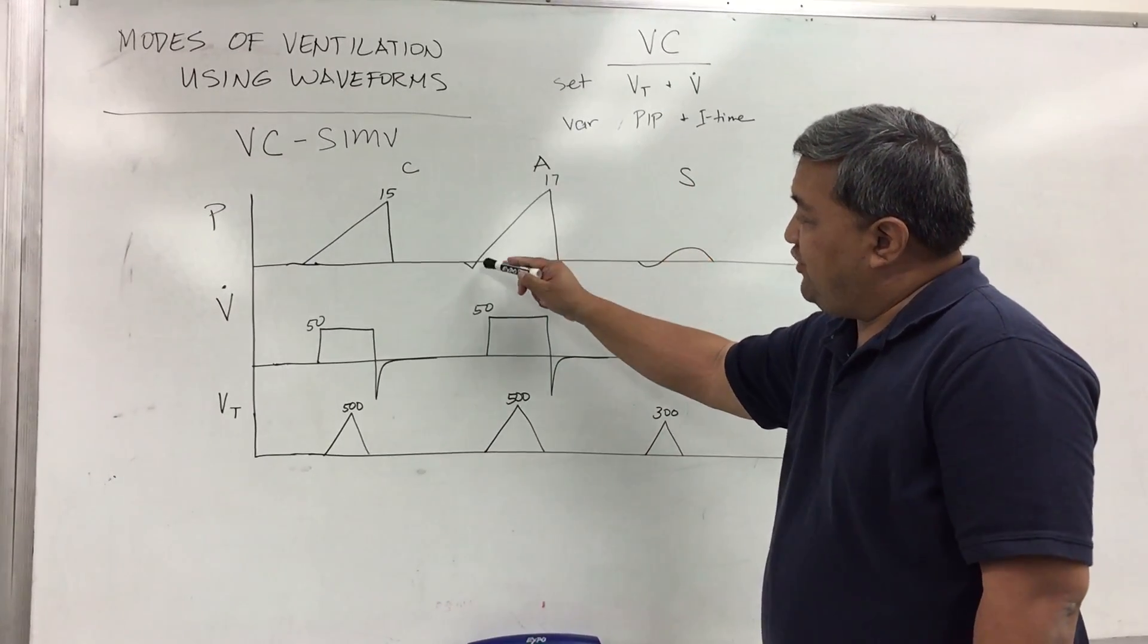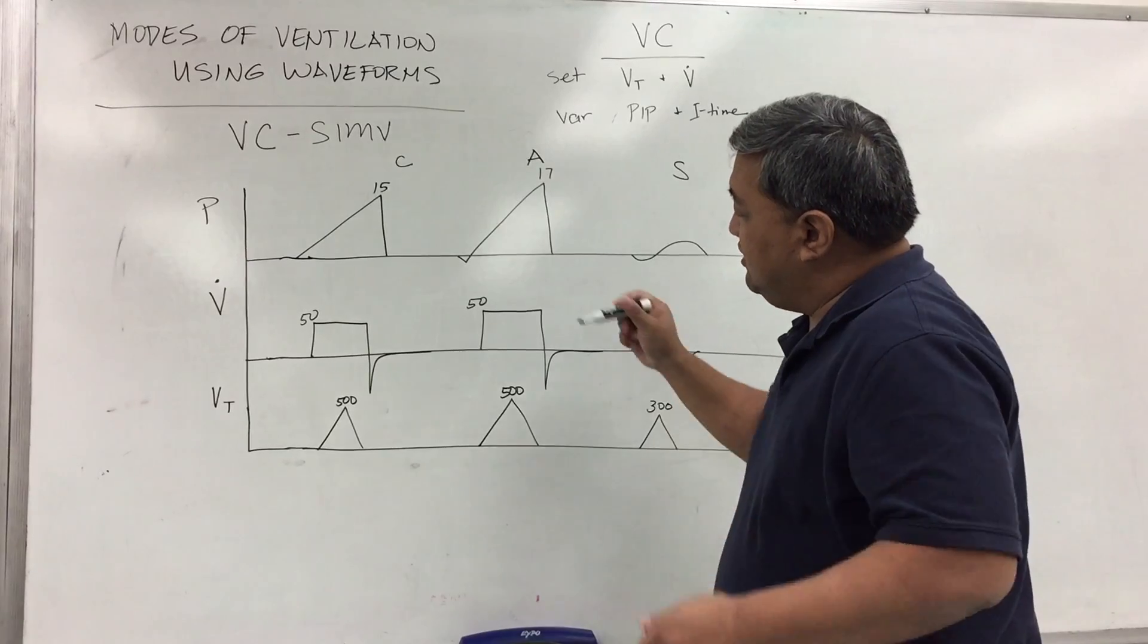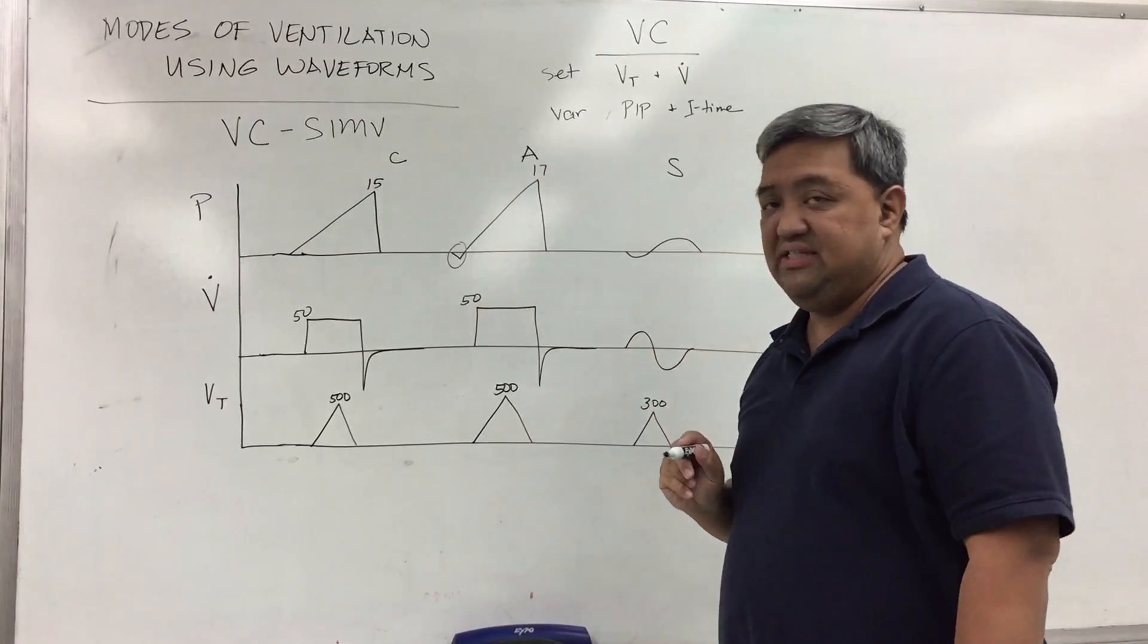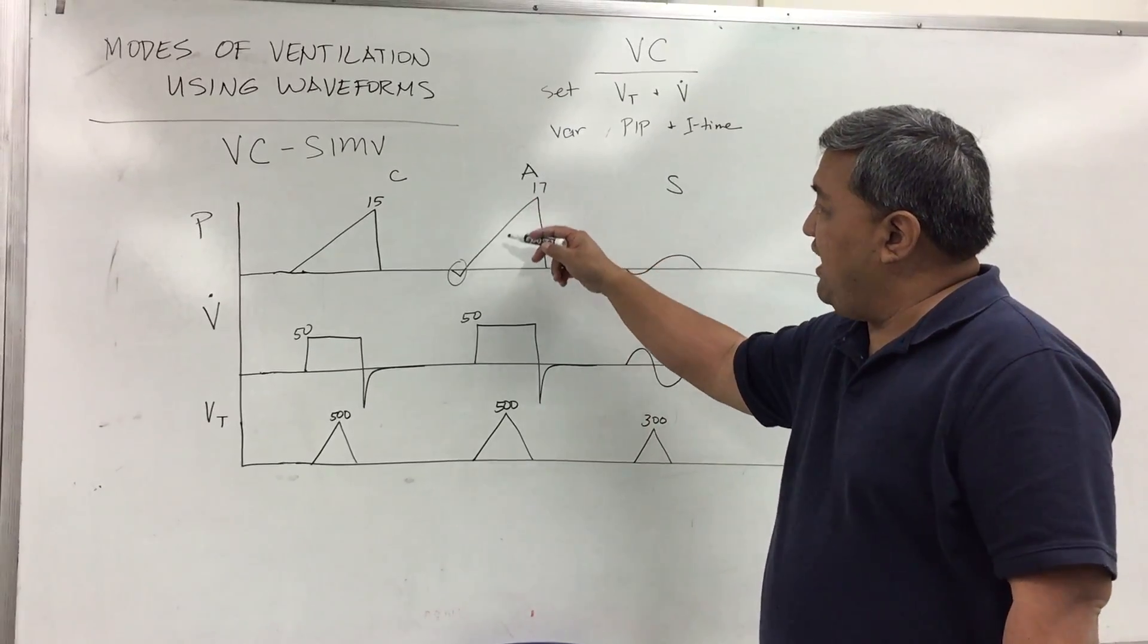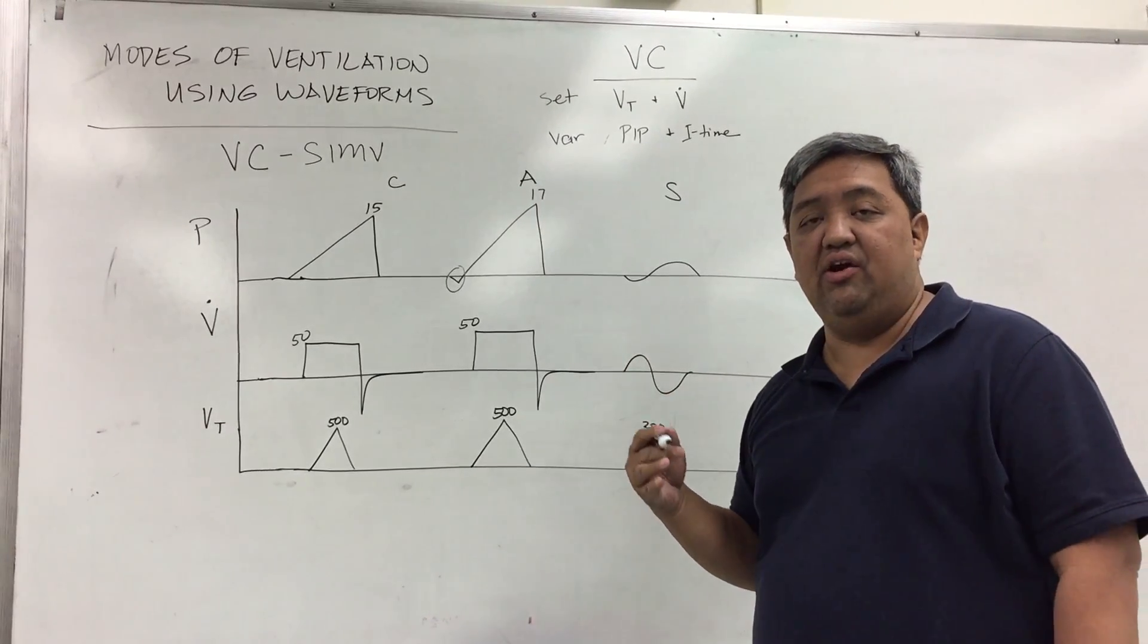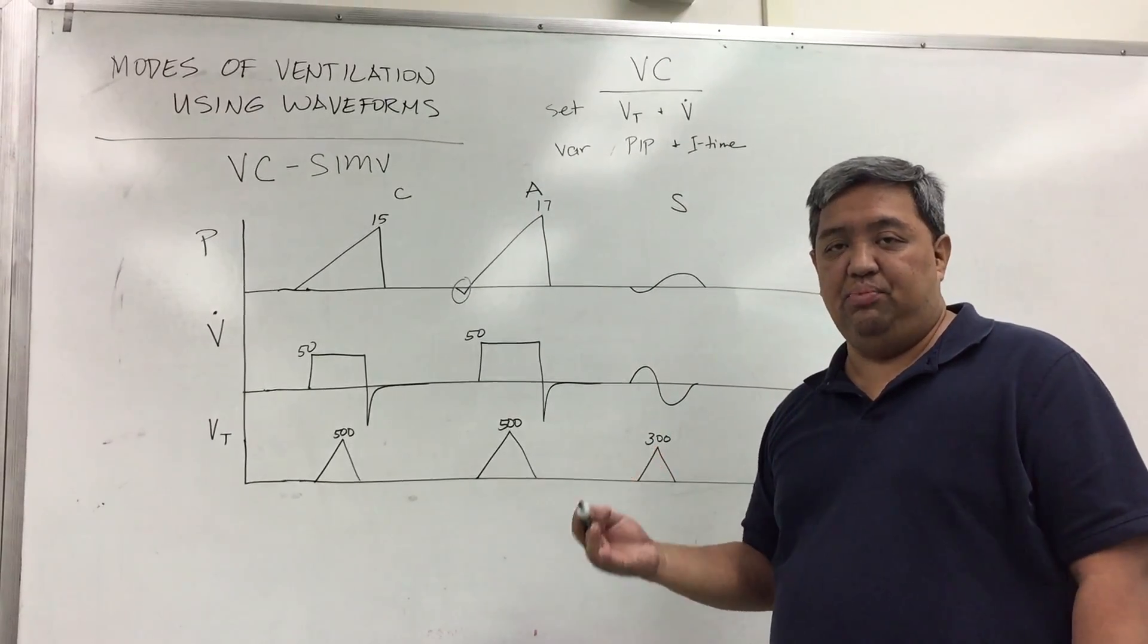On the next breath you have this negative inflection which tells you it is an assisted breath. And again with the same flow and volume you may have a variable pressure depending on the resistance and compliance.